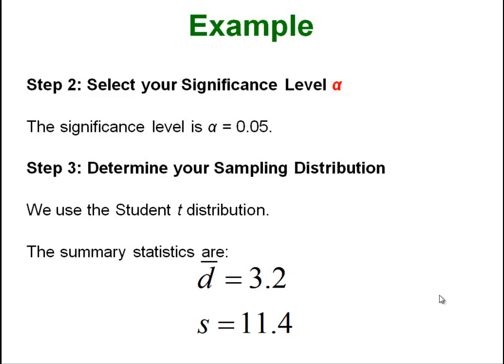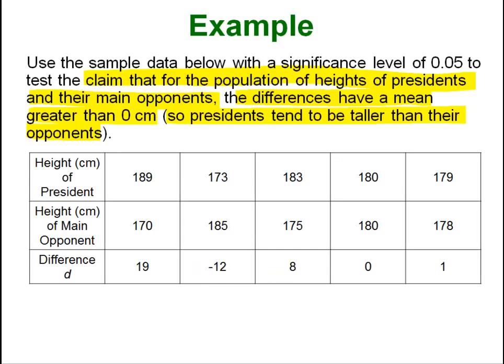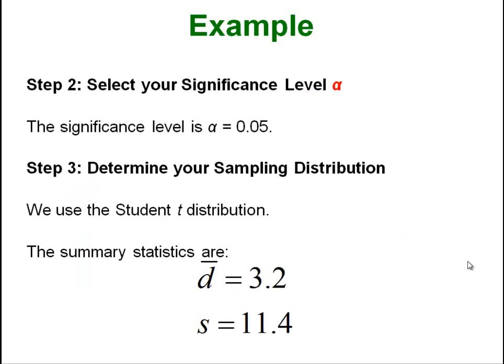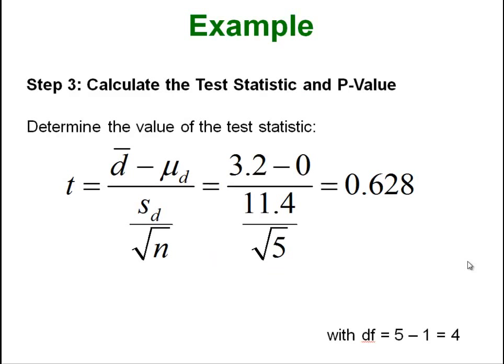We can take those five differences, these ones at the bottom here. So we are basically now just working with these five numbers. If we take those five differences we can calculate the average and standard deviation of those five numbers and get d bar equals 3.2 and s equals 11.4, and then it is just a matter of plugging those into our formula and getting our t value, our test statistic of 0.628.